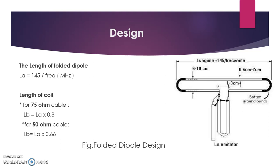Now we will see the design of the folded dipole. As shown in the figure, it indicates the folded dipole design. The length of the folded dipole La equals 145 divided by frequency in megahertz. The length of the coil LB: for a 75-ohm cable, LB equals La multiplied by 0.8; and for a 50-ohm cable, LB equals La multiplied by 0.66. You can see this in the figure and it is quite easy to understand.